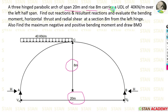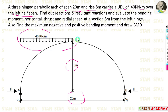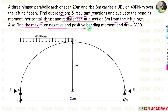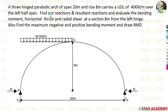It carries a UDL of 40 kilonewton per meter over the left half span. We have drawn the UDL of 40 kN/m on the left half. Find out reactions and resultant reactions, and evaluate the bending moment, horizontal thrust, and radial shear at a section 8 meters from the left hinge. Also find the maximum negative and positive bending moment and draw the BMD.